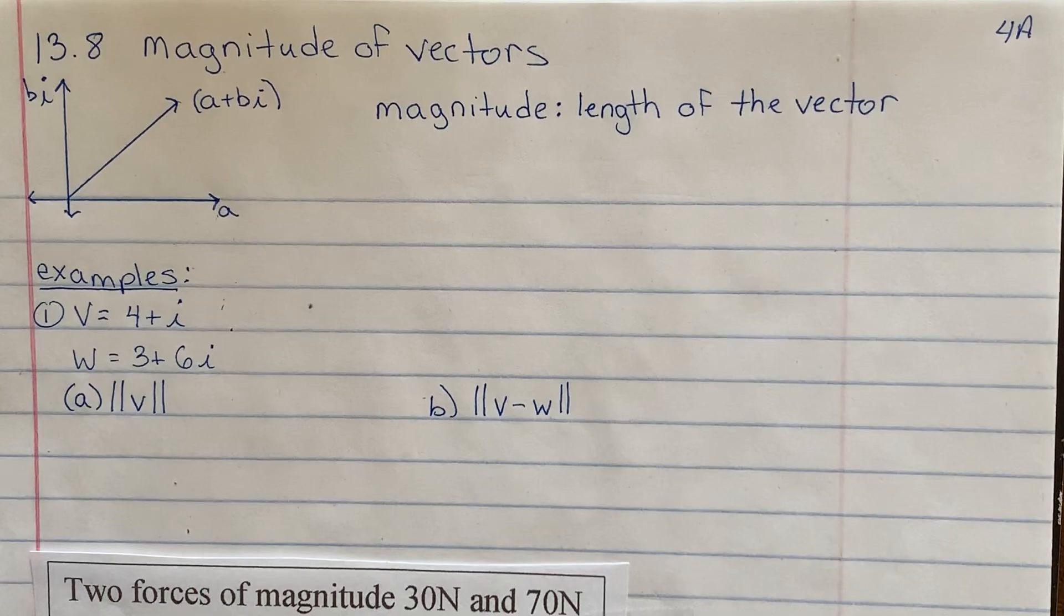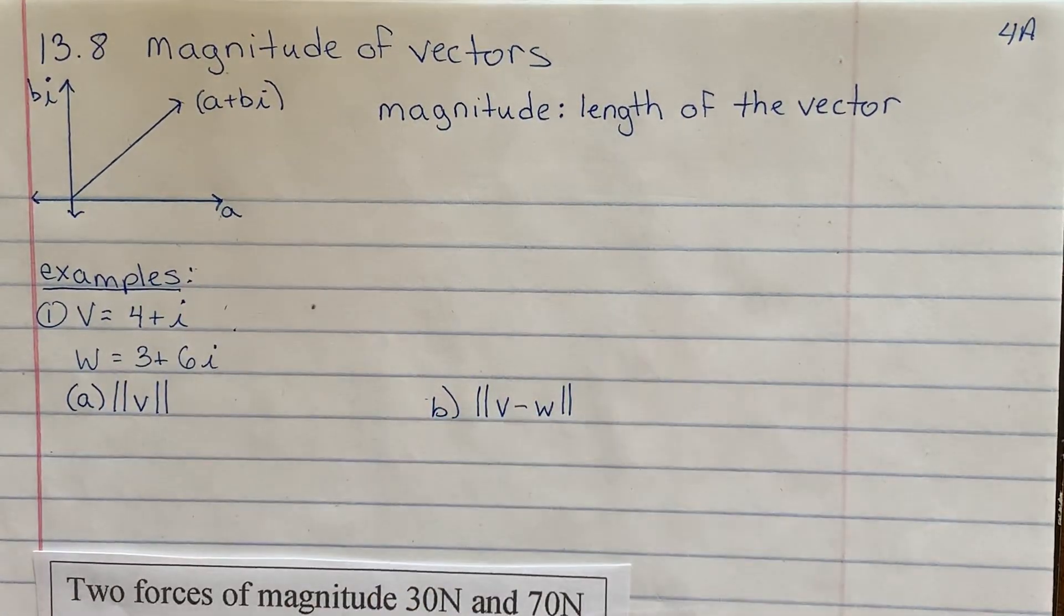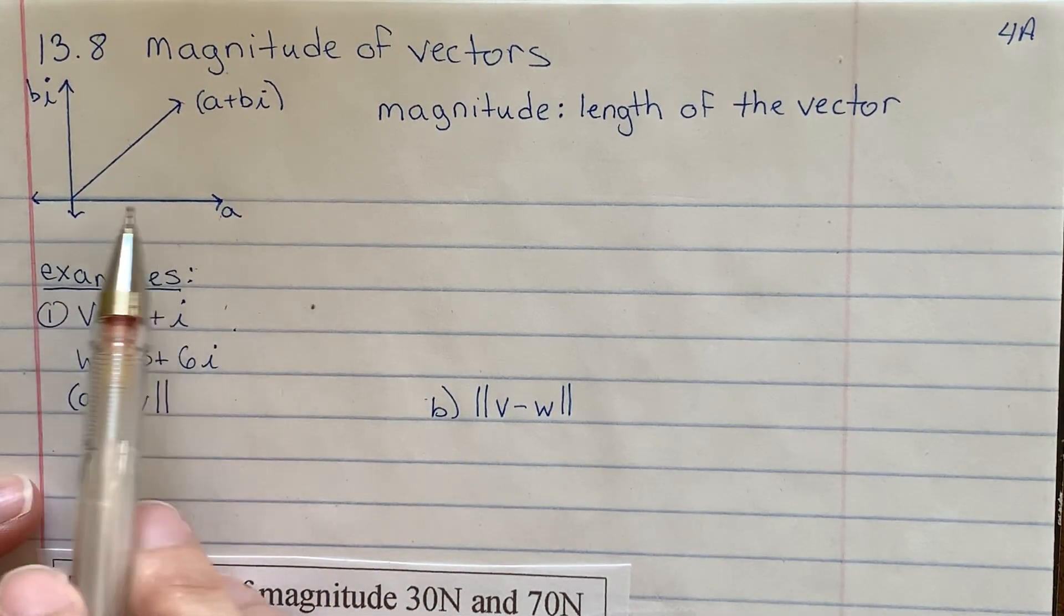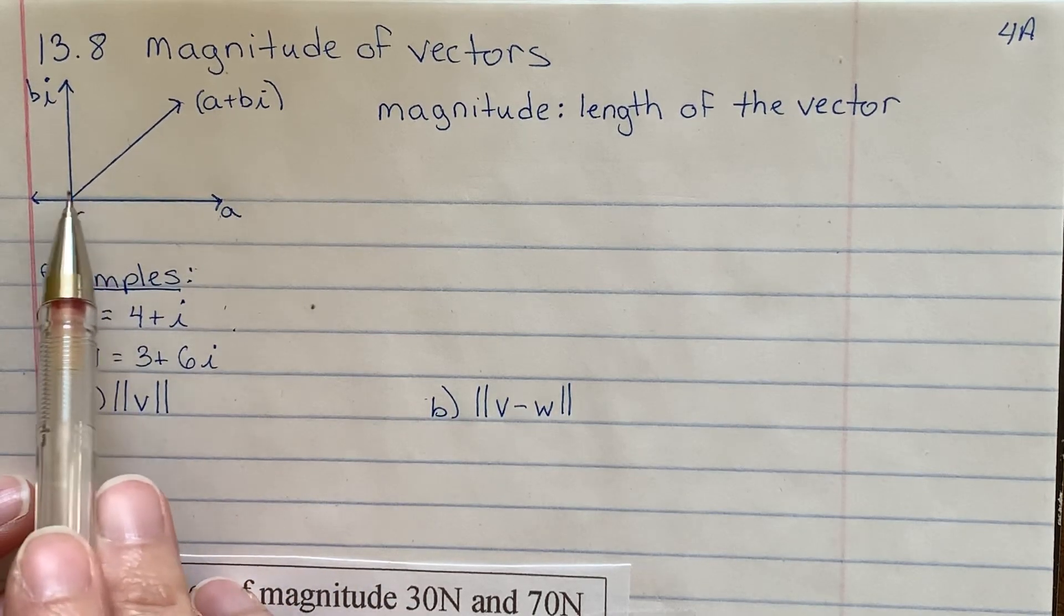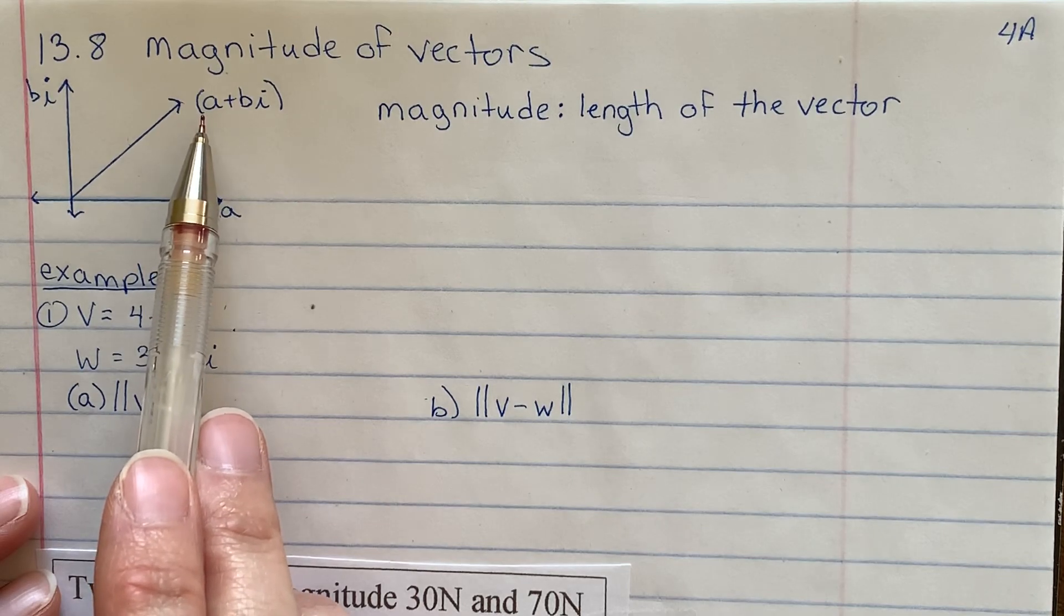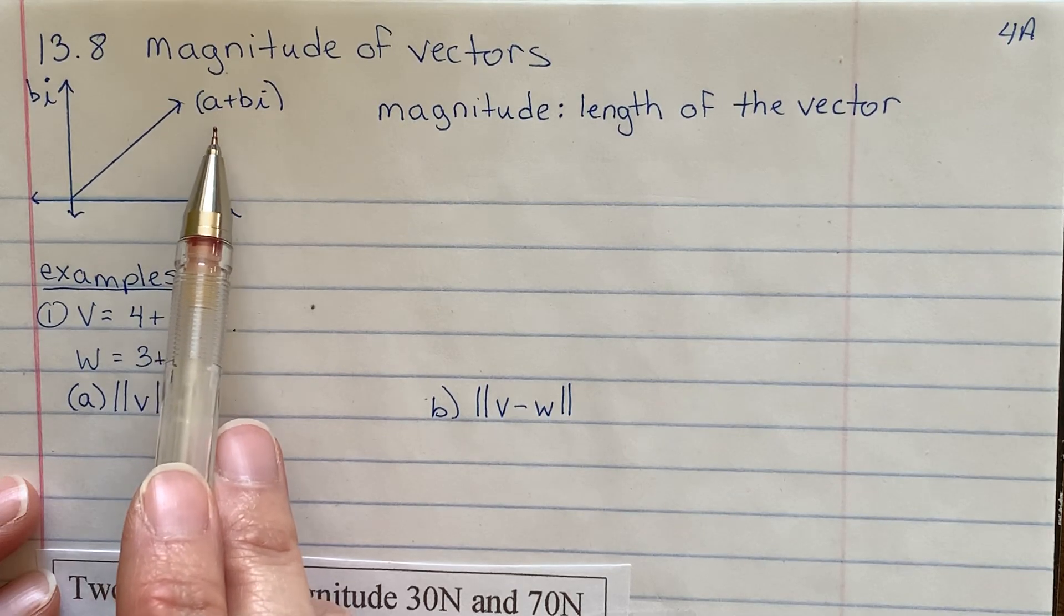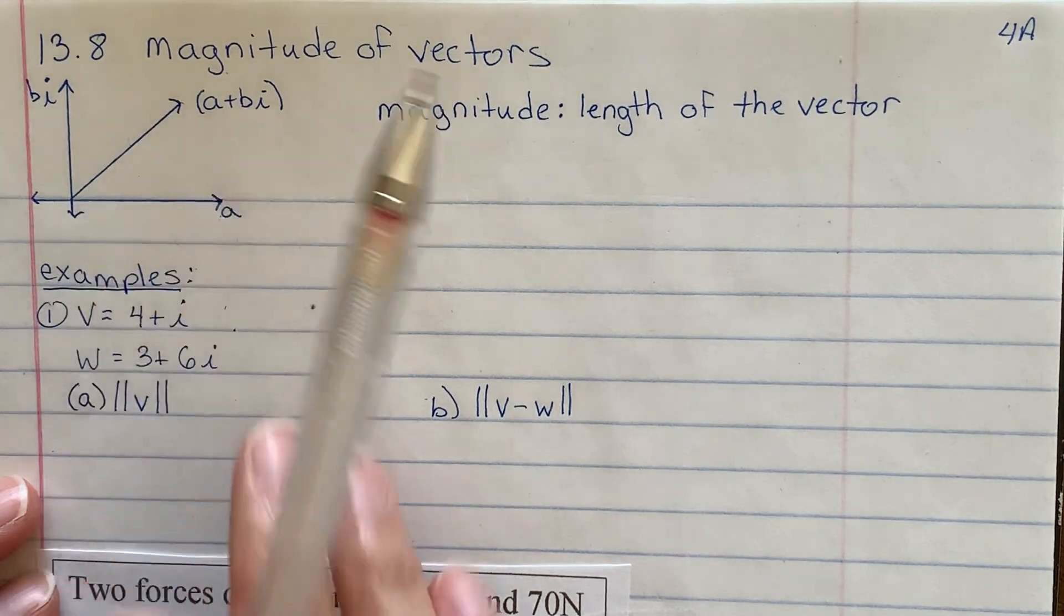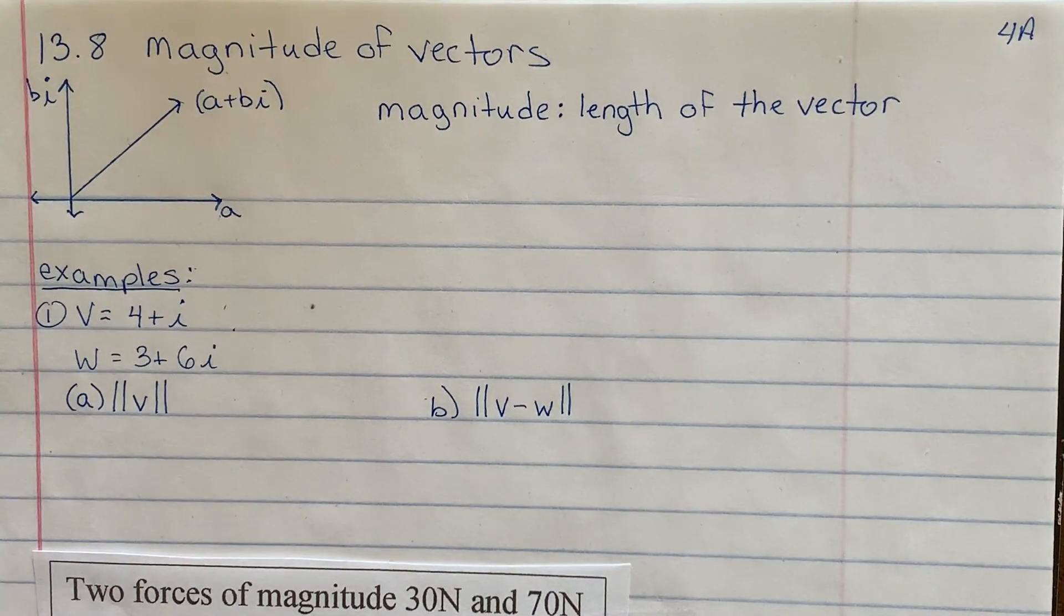I've got some notes already copied up here. I went ahead and wrote an axis of A plus Bi so that I could plot a vector. A vector is just a ray starting at the origin. It goes, essentially, just like plotting a point. Like if this was a point, for example, 1 plus 3i, you would go to 1, 3 and make that into an arrow with the tip of the arrow at that 1, 3 coordinate.